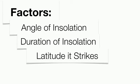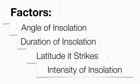The latitude where the sun strikes also matters. The North Pole and South Pole are cold, while the equator is very warm. The reason for that is the angle of insolation is going to strike the North Pole and South Pole very indirectly, but it's going to strike the equator very directly. The more direct the sun, the greater the temperature. Intensity is the strength of the sun's energy, and it's directly dependent upon the angle itself. The lower the angle, the lower the intensity; the higher the angle, the greater the intensity.